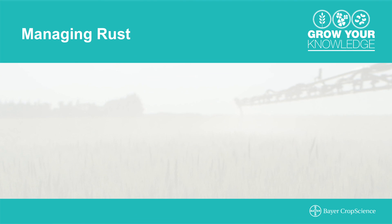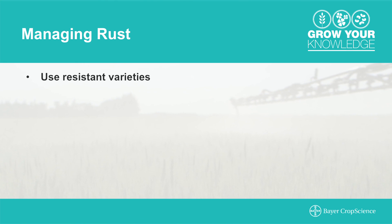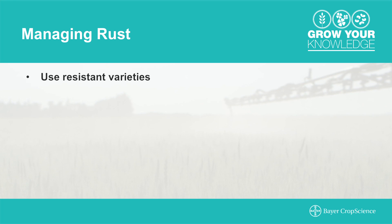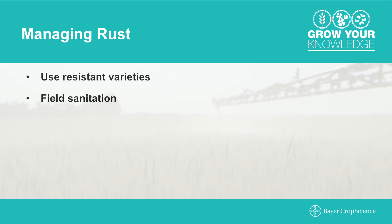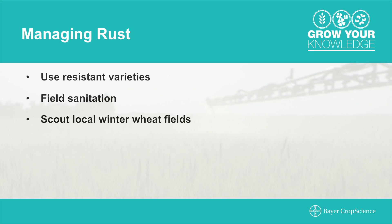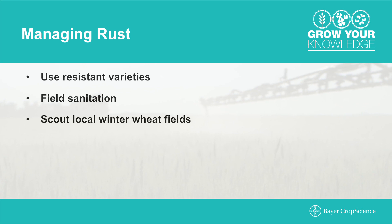There are many tools that growers can use to manage rusts. One of the primary ones is the use of resistant seed varieties. Another key factor when we look at stripe rust in the western prairies is field sanitation and choosing the location for your winter wheat fields — making sure they're not placed beside an infected spring wheat field is essential.